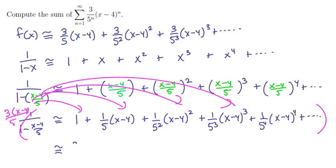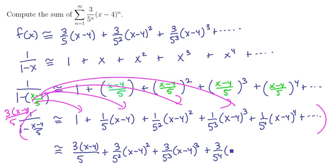So if we multiply through, we're going to have 3(x minus 4) over 5, plus 3 over 5 squared times (x minus 4) squared, plus 3 over 5 cubed times (x minus 4) cubed, plus 3 over 5 to the fourth power times (x minus 4) to the fourth, plus all the way down the line.